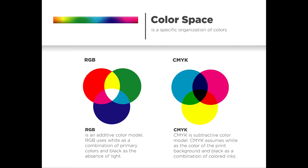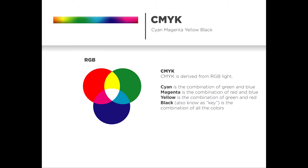CMYK is what we use for print — cyan, magenta, yellow, and black — and it is a subtractive color model. CMYK assumes we're printing on a white background, so when you combine CMYK together, you get black. Interestingly, cyan is the combination of green and blue light, magenta is the combination of red and blue light, and yellow comes from red and green — which is how we make those colors for CMYK printing.